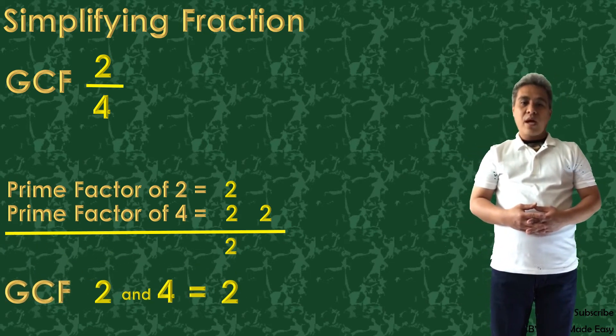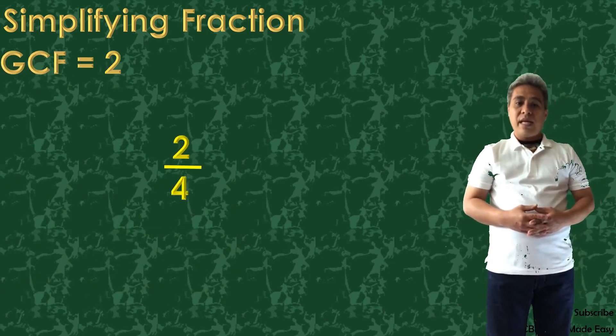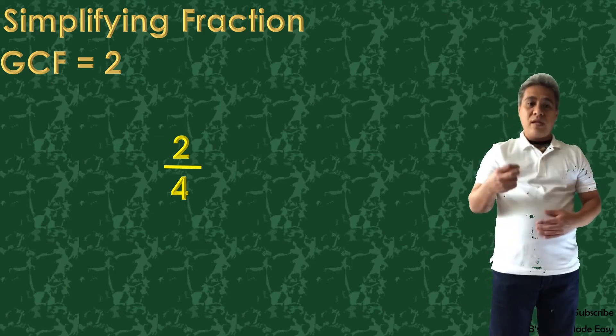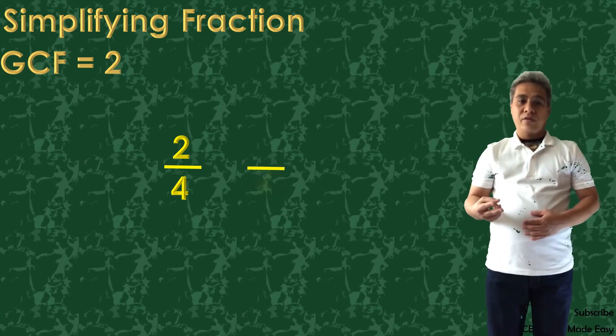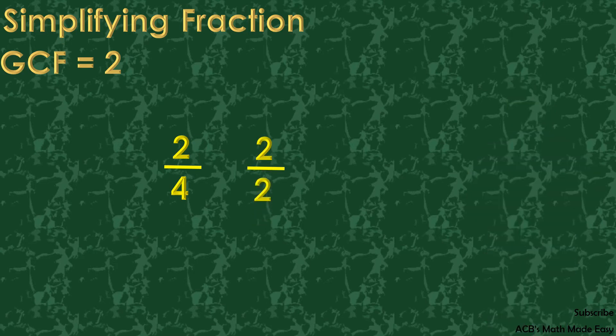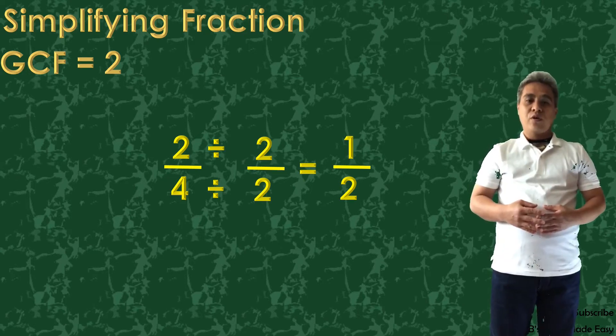Now that we have the GCF of 2, the next step is to make 2 the numerator and denominator and then divide them. 2 divided by 2 equals 1 and 4 divided by 2 equals 2. We have just simplified 2/4 to 1/2.